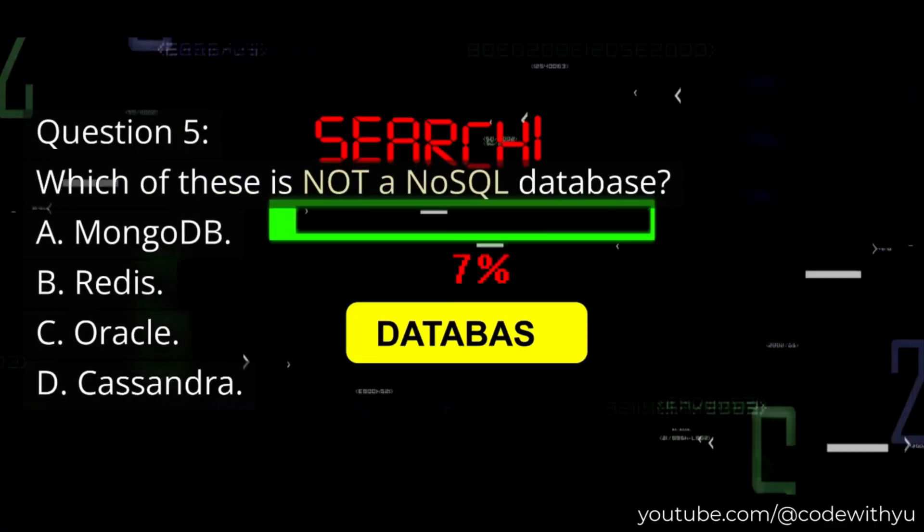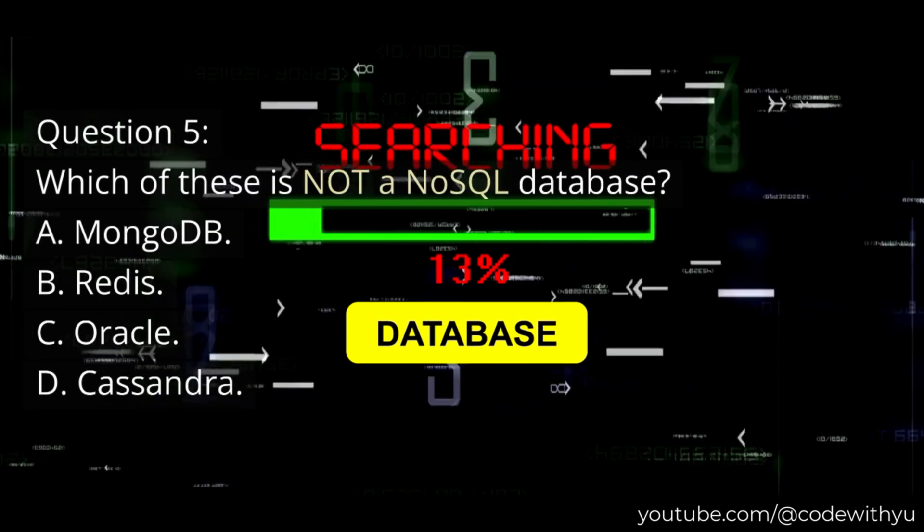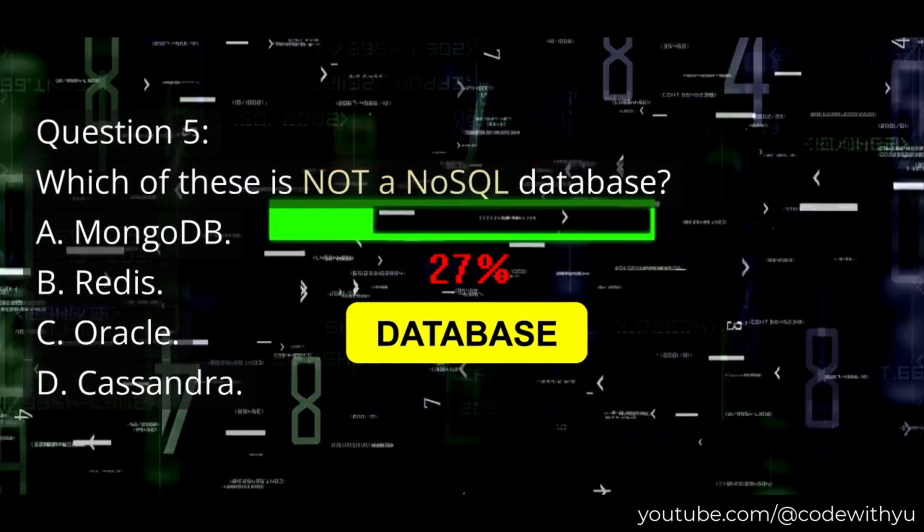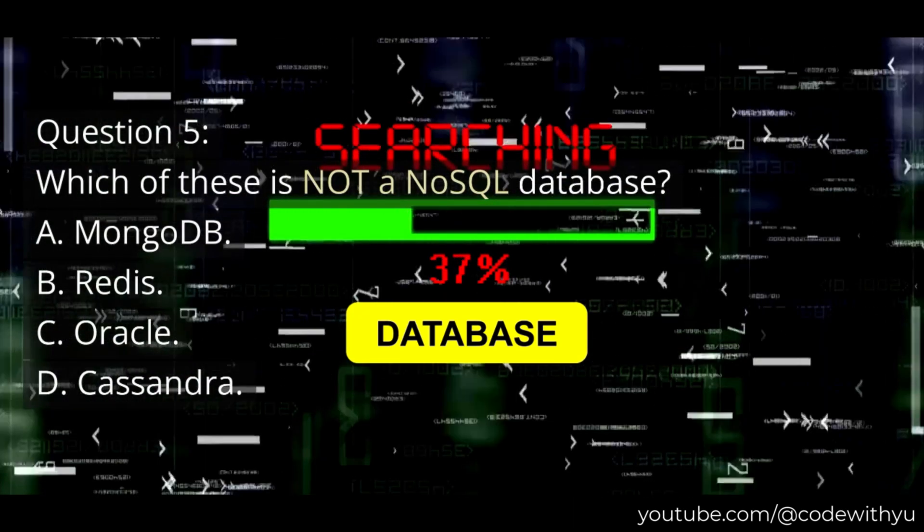Question 5. Which of these is not a NoSQL database? A. MongoDB, B. Redis, C. Oracle, D. Cassandra.